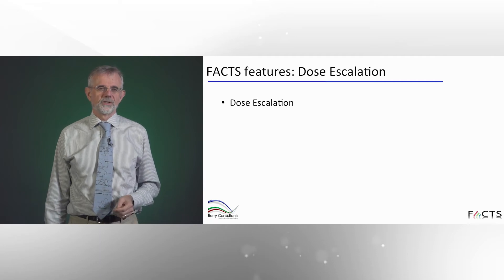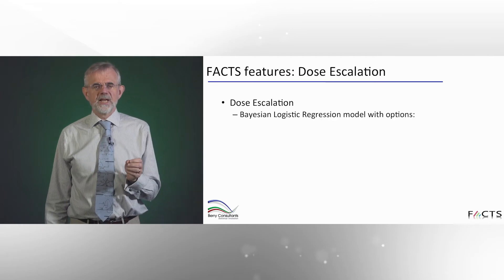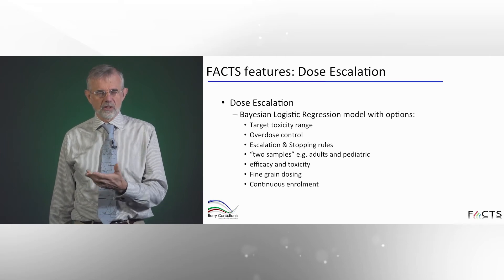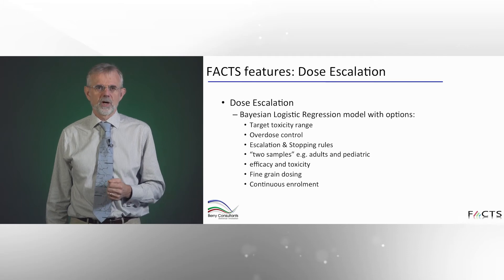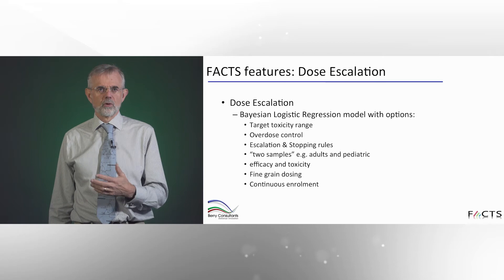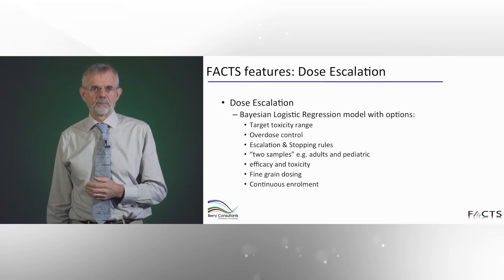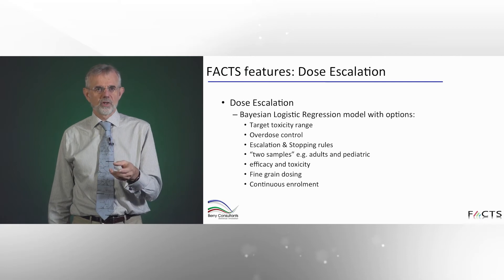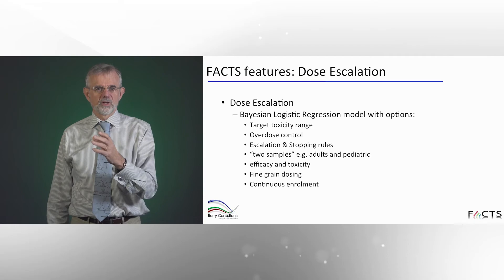Now we'll look at those four classes in more detail. Starting with dose escalation: the primary module is a Bayesian logistic regression model. Within that you can target a toxicity range rather than just a maximum tolerated dose, incorporate overdose control to limit the likelihood of seeing toxicity, and add rich escalation and stopping rules on top of simple cohort-based escalation. There are also options for two samples in the trial — for instance an adult and a pediatric population — additional endpoints for efficacy and toxicity, and fine-grained dosing that allows adjustments smaller than a whole dose step once you're close to your target.